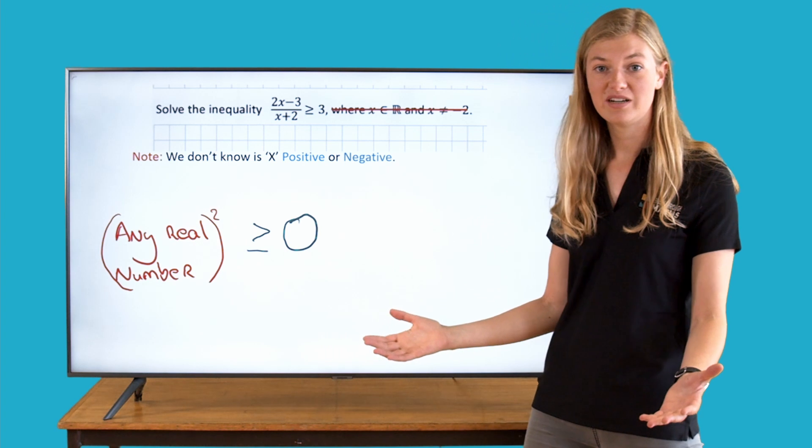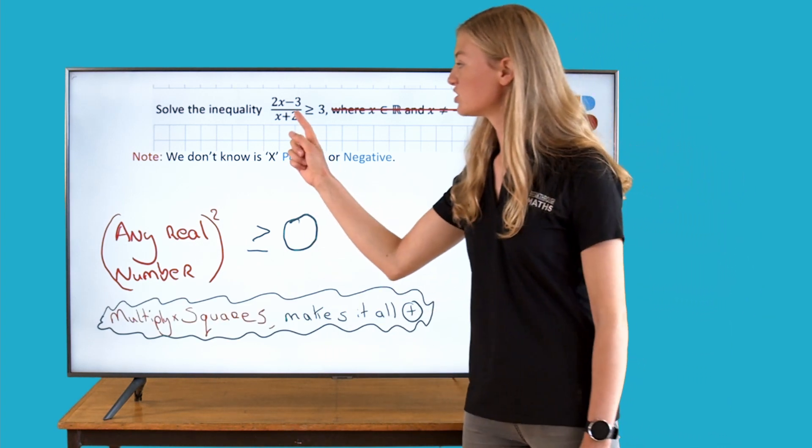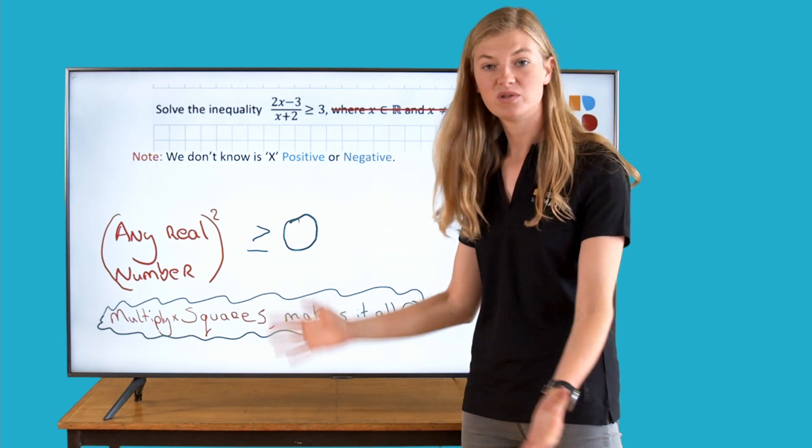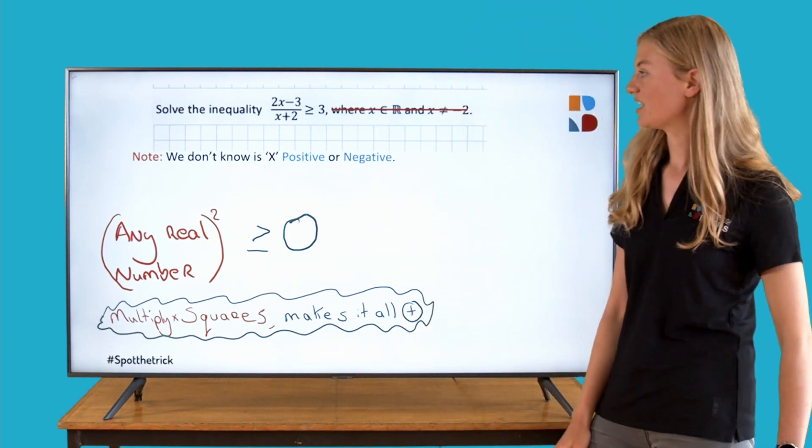So what are we going to do here? What's the trick? We're going to square this x plus 2 under the line and multiply both sides by that. Let's have a look at that.